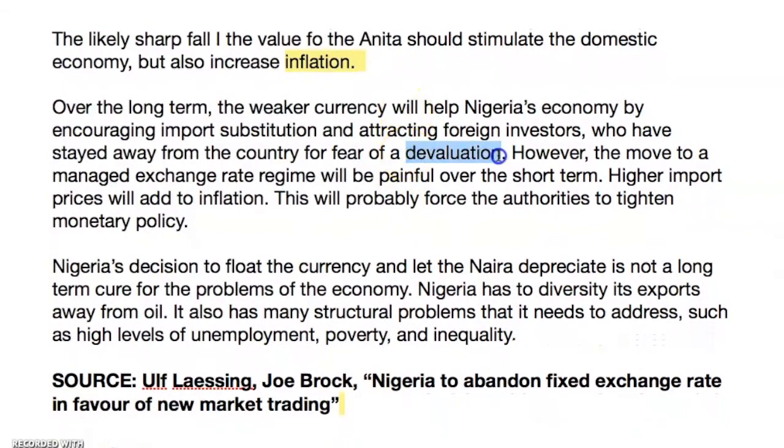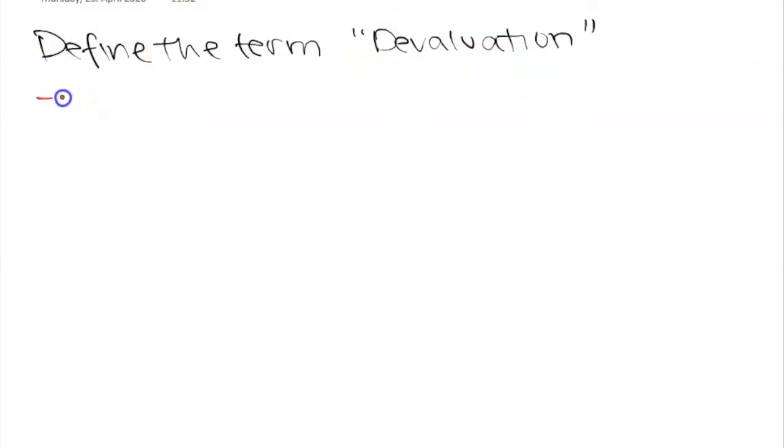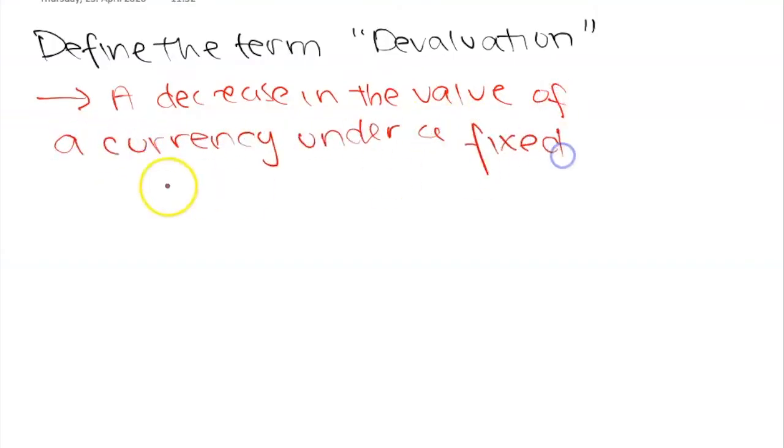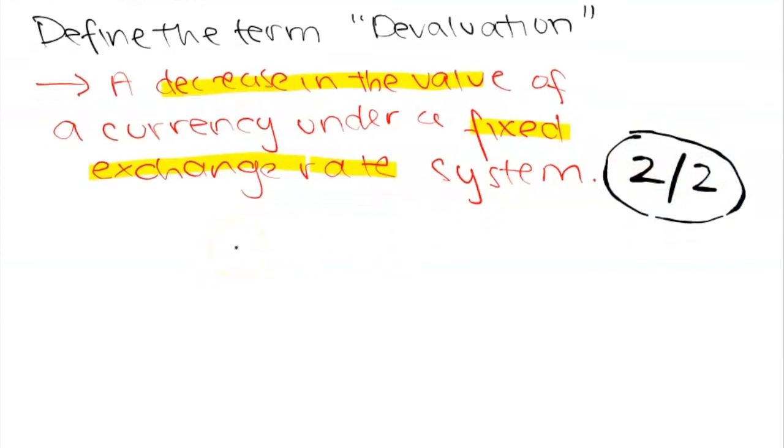The next question asks us to define the term devaluation indicated in the text paragraph 7. This is a very common mistake that students make. Devaluation and depreciation might seem like the same thing, but they are not. They both mean a fall in the value of a currency, but a devaluation can only happen under a fixed exchange rate system. Therefore, it is caused by government interference or central bank interference, whereas a depreciation happens naturally as caused by market forces. The key part of this definition is actually under a fixed exchange rate system. You won't get two marks if this is not included.